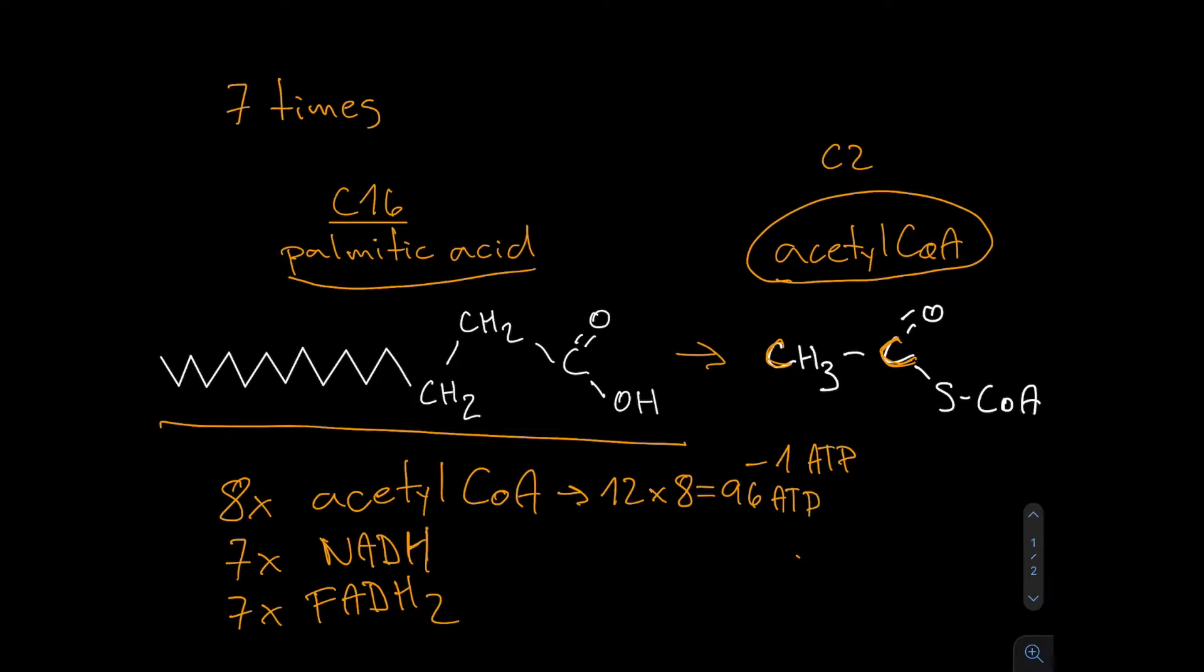From each NADH we get three ATPs in the process of cellular respiration. So we get 3 times 7 ATPs, which is 21 ATPs. And from each FADH we get two ATPs in cellular respiration, so that's 14 ATPs. The total amount of ATP gained from degrading palmitic acid is 96 plus 21 plus 14 minus one ATP that we used at the beginning to activate the process, which is 130 ATPs per one molecule of palmitic acid. In comparison, from one molecule of glucose we are only getting 38 molecules of ATP. From that we can assume that degrading fats gets us a lot more energy than degrading saccharides.